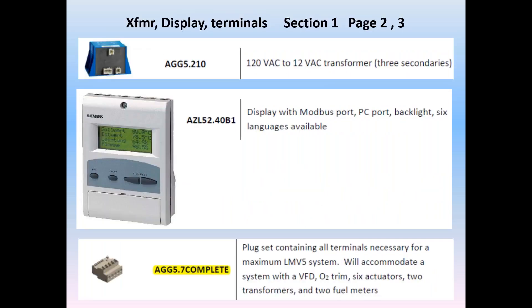Each LMV5 installation will require a transformer that has three secondaries. This provides power for the LMV5's dual processors, the CAN bus network, which includes the LMV5, the AZL display, all of the actuators, sometimes referred to as servos, and finally the PLO module if used for oxygen trim. This AZL is also called an HMI. It is the keyboard display unit that can be used with any of the LMV5 versions, past or present.